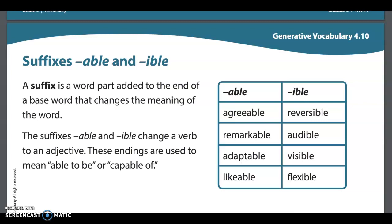So for example, the suffixes -able and -ible that we're talking about today change a verb into an adjective, and these endings are used to mean able to be or capable of. For example, if we look at the word agreeable, the root word or the base word for that would be agree. That's a verb that means you would go along with something. You have the same opinion, but when we add agreeable, it changes it to mean capable of agreeing.